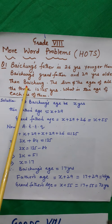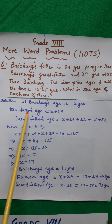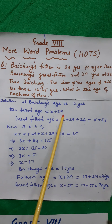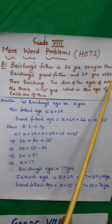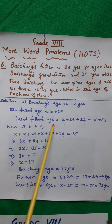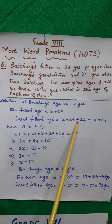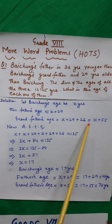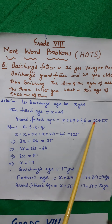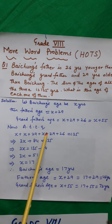Let us assume that Batcham's age is x years. Then father's age will be x plus 29, because he is 29 years older than Batcham. And grandfather's age will be x plus 29 plus 26, that is x plus 55.